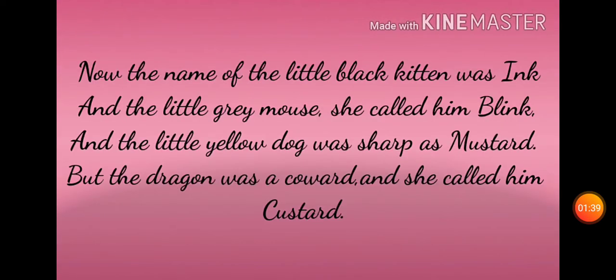Now the name of the little black kitten was Ink, and the little grey mouse she called him Blink, and the little yellow dog was sharp as Mustard, but the dragon was a coward and she called him Custard.